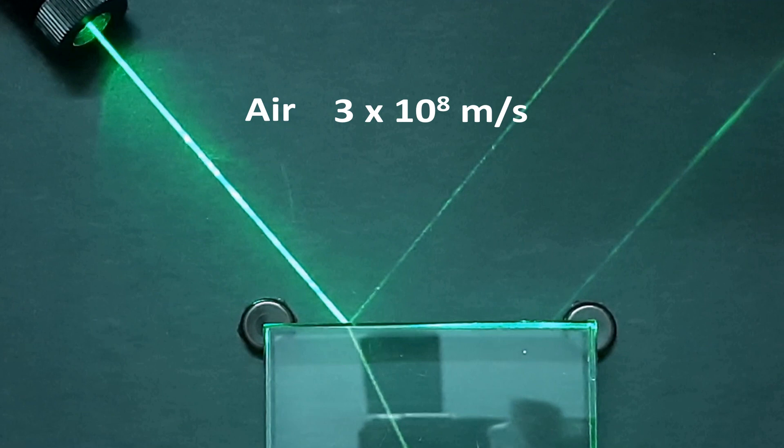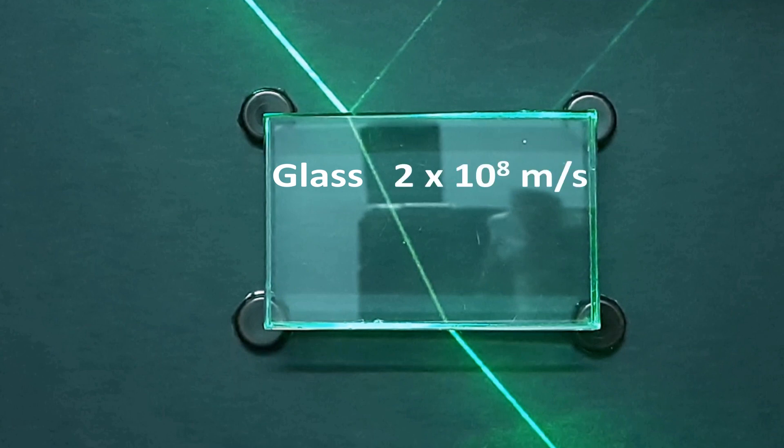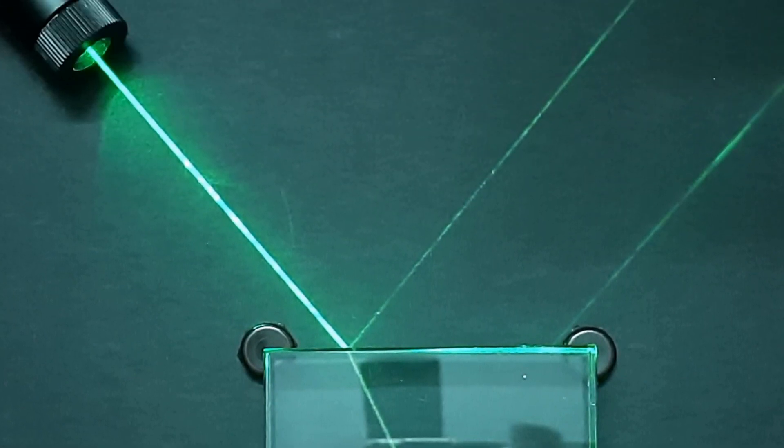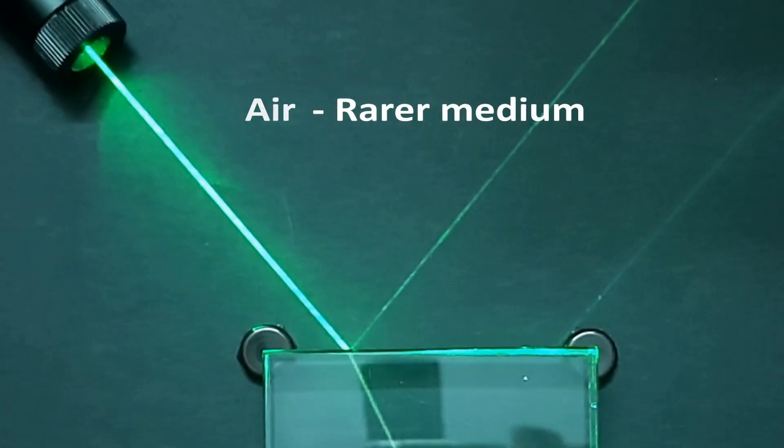Which is 3 × 10^8 meters per second. And in glass light travels slower, approximately 2 × 10^8 meters per second. We call air a rarer medium since light travels faster in it, and glass as denser medium as light travels slower in it.